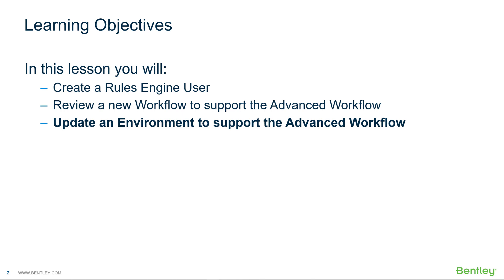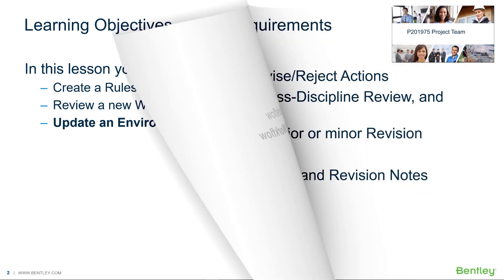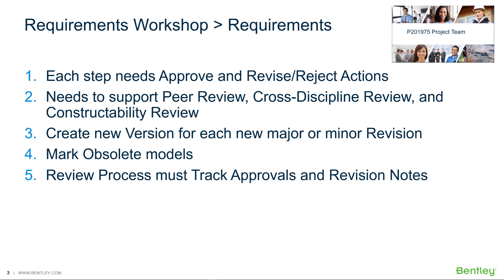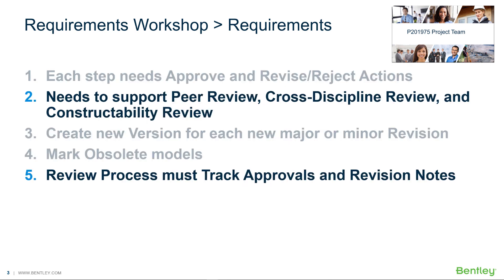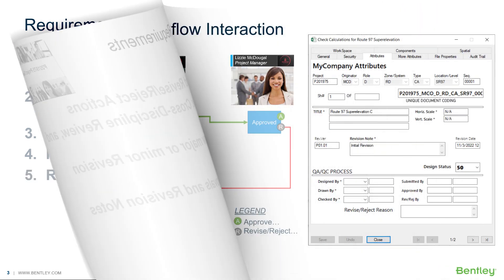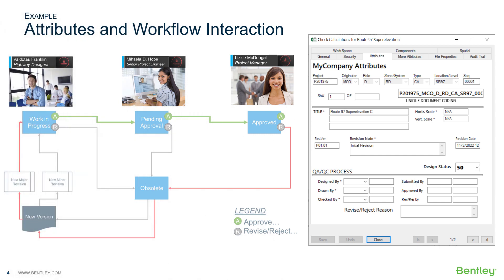Next, we will look at a ProjectWise environment to see if any changes need to be made to support the project team's design review process. Recall the project team's requirements for the design review process from the requirements workshop. Additional attributes need to be added to track approvals and add revision notes as required by items 2 and 5. The changes we make to the environment will reflect these needs. Let's see how we could address the team's requirements with environment attributes.